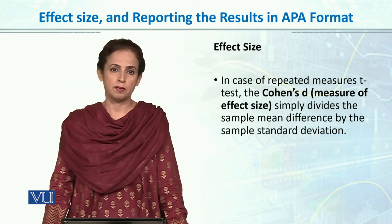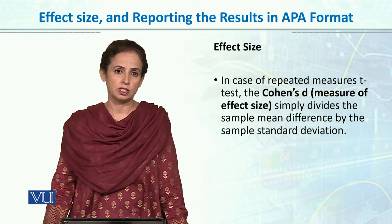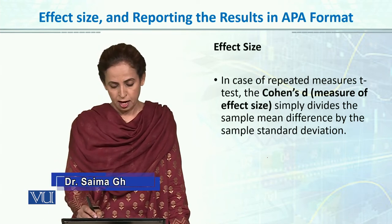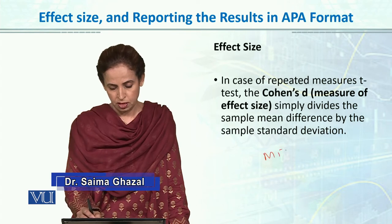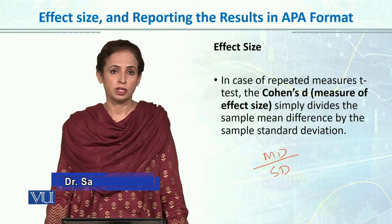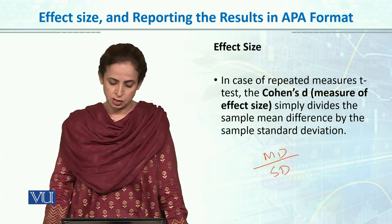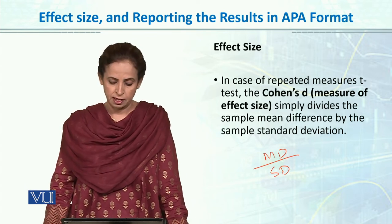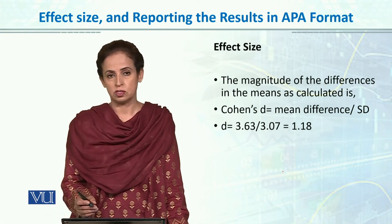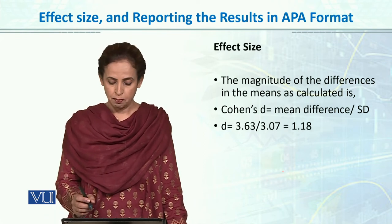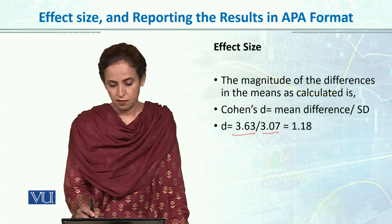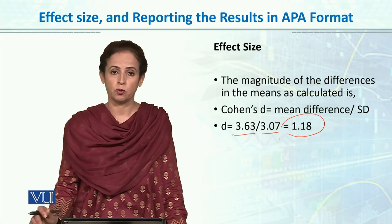For Cohen's D, we don't need to go to a calculator. Rather, we can just calculate it by dividing the mean difference by the standard deviation. From the previous SPSS output, we are given both the mean difference and the standard deviation. Simply, we can calculate Cohen's D for paired sample t-test by dividing the mean difference by the standard deviation, so Cohen's D is 1.18.